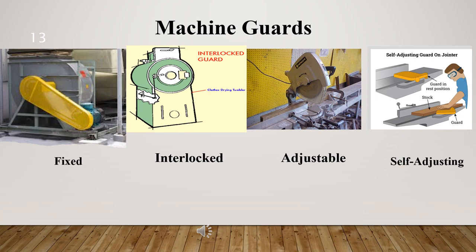The purpose of machine guarding is to protect the machine operator and other employees in the work area from hazards created during the machine's normal operation. This includes hazards such as ingoing nip points, rotating parts, reciprocating, traversing, and flying chip sparks. The common machine guards are: fixed, interlocked, adjustable, and self-adjusting. We will discuss each machine guarding method in detail in the next parts.